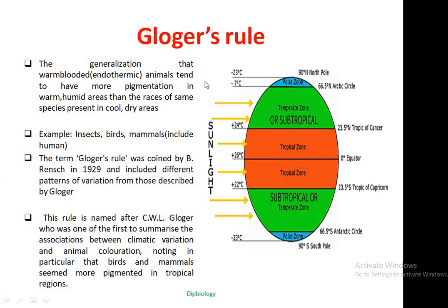These kinds of animals tend to have more pigmentation or coloration in warm and humid areas than the races of the same species present in cold and dry areas. That means individuals of the same species or race present in warm and humid areas have dark pigmentations, while those in cold and dry areas have light pigmentation. This pigmentation variation is observed in insects, birds, and many mammals including humans.